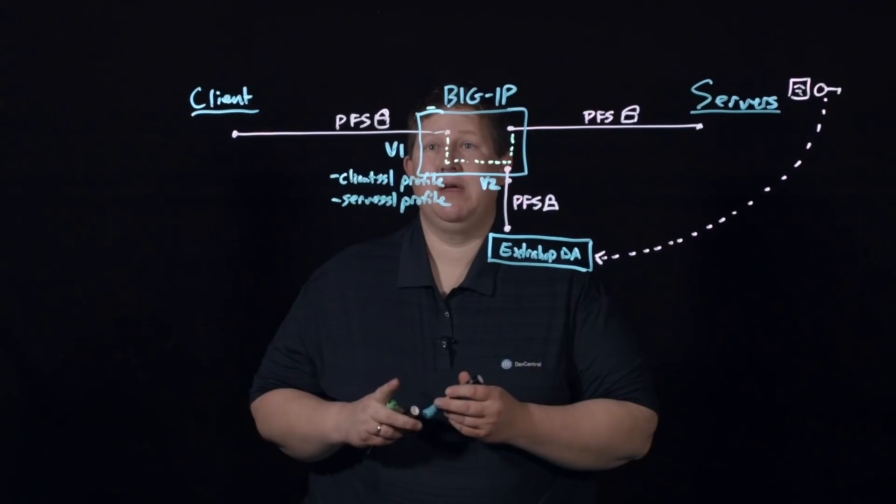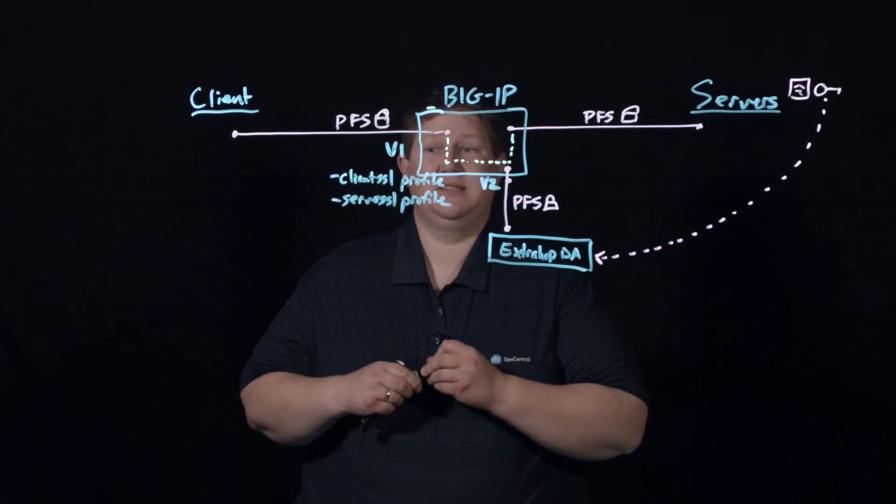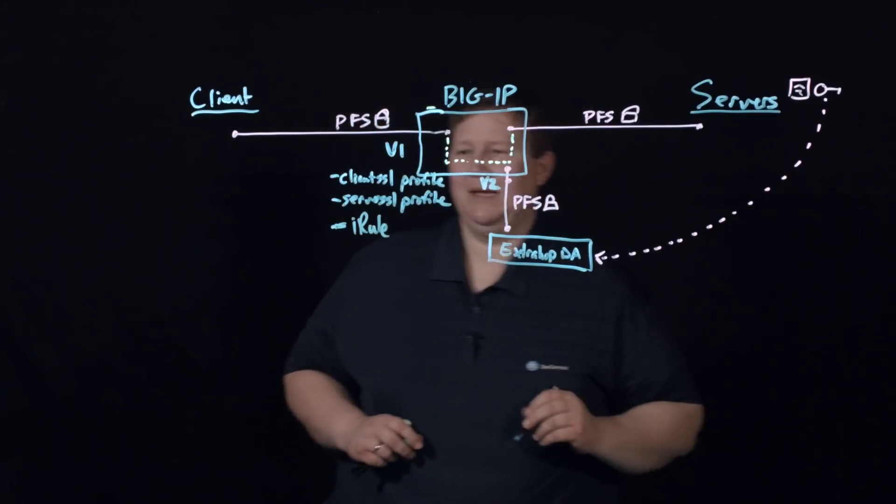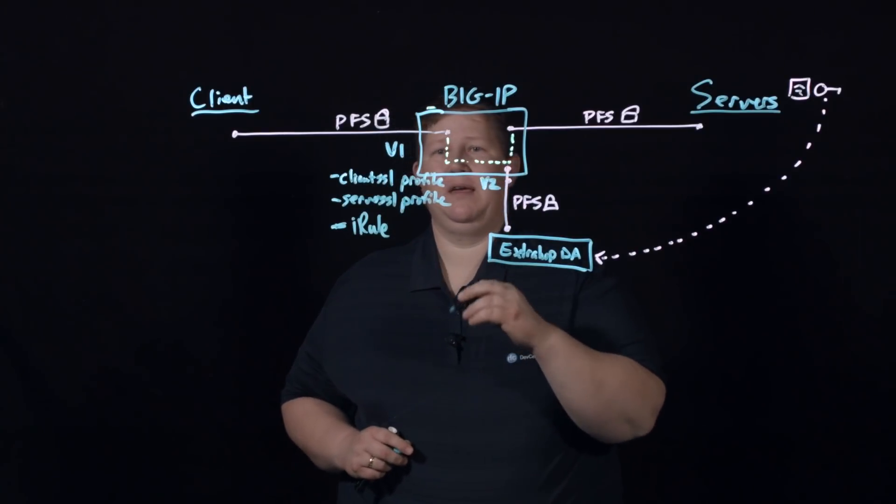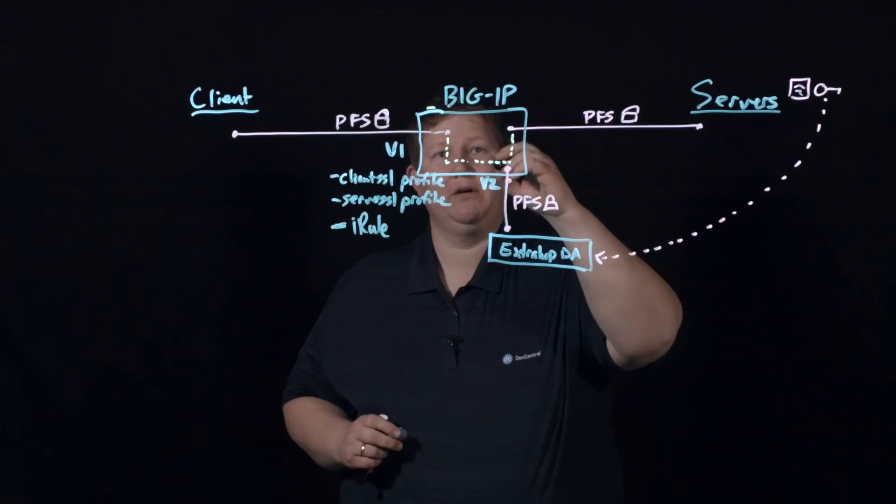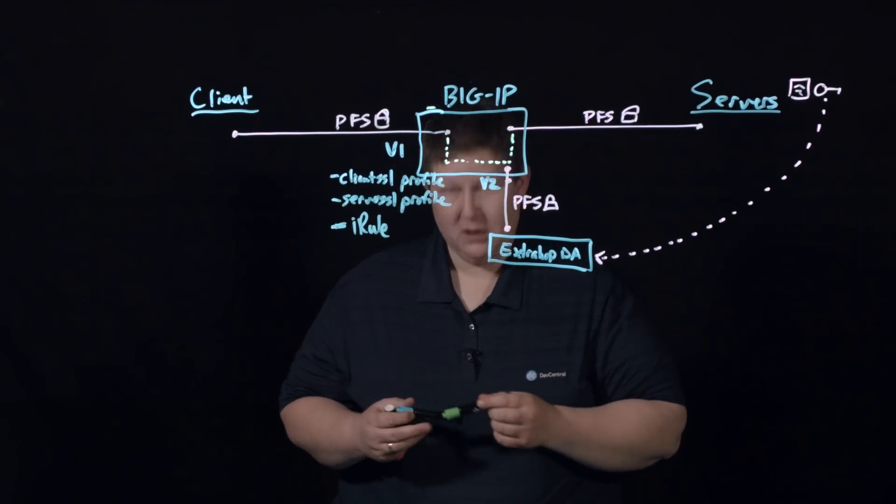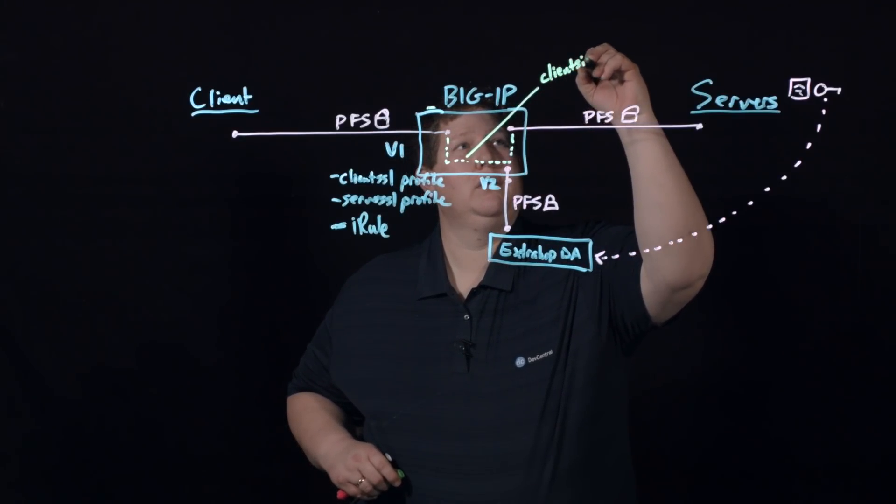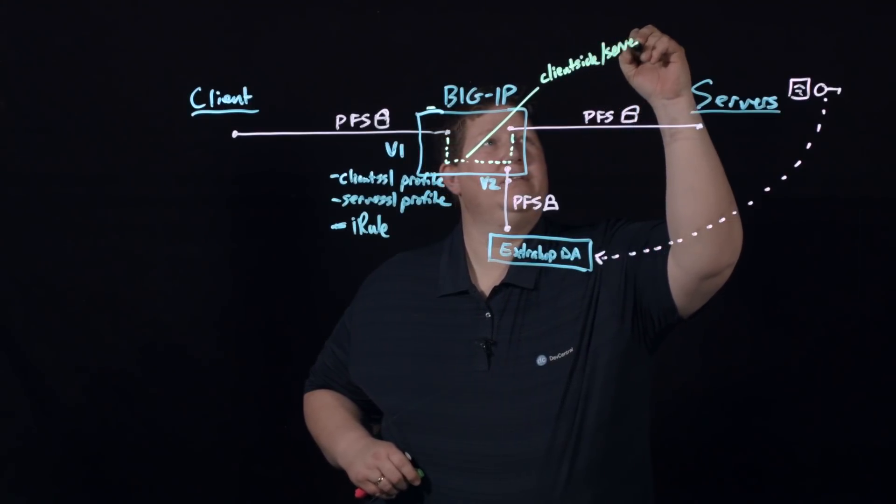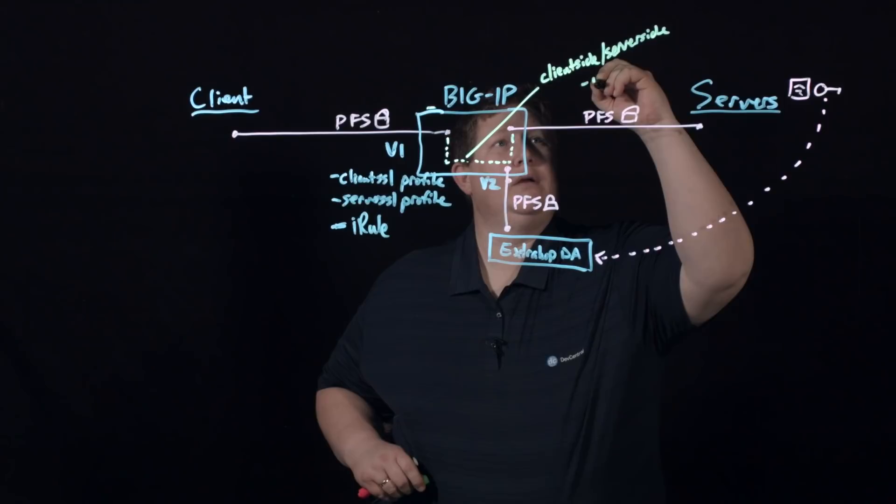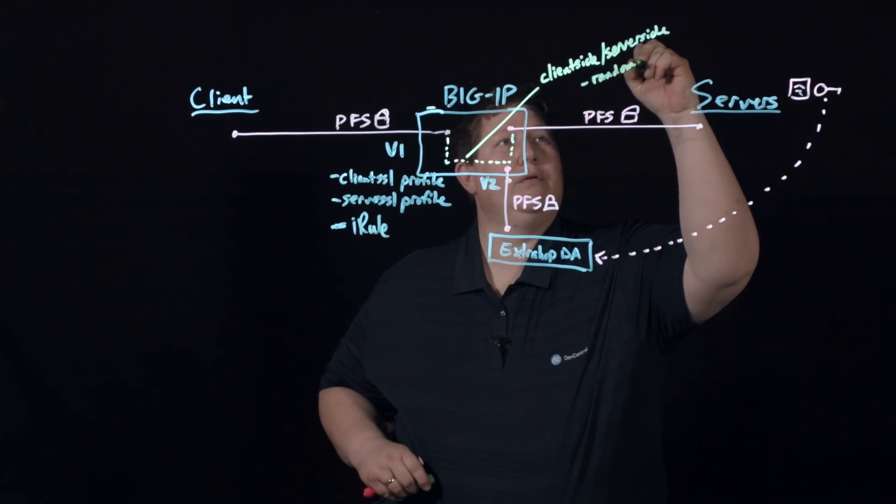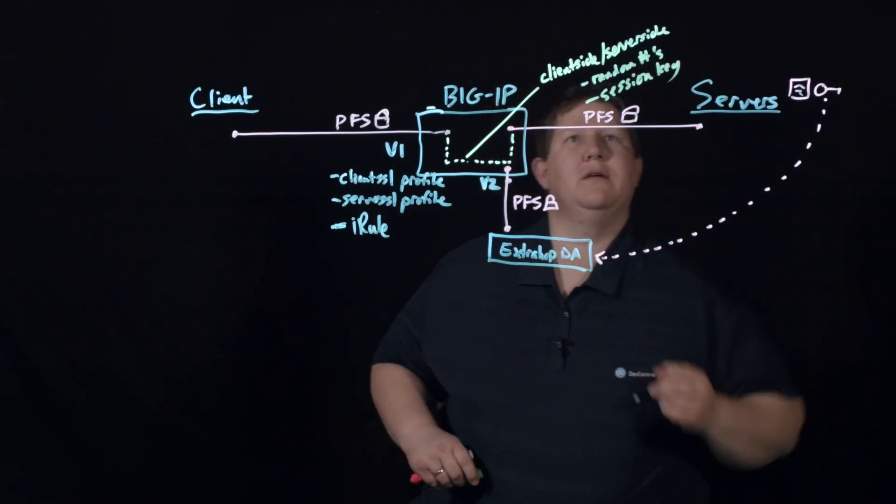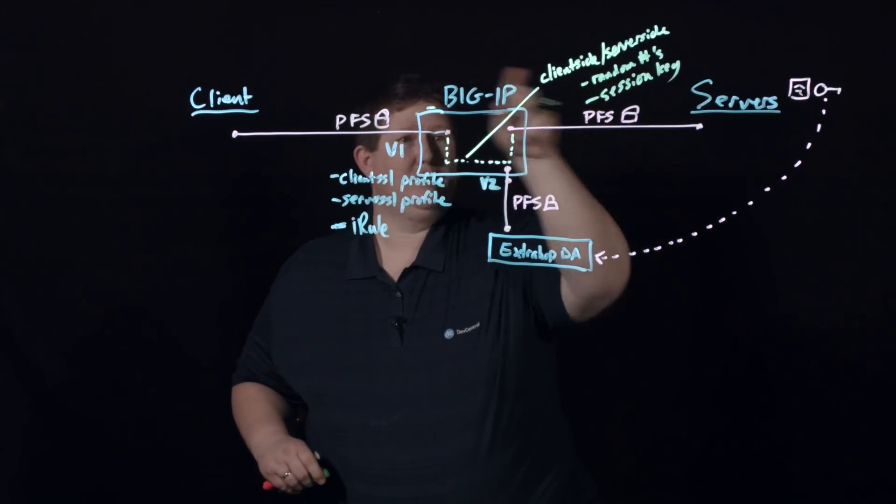And so what we do here is we have an iRule that sits on this virtual server. And this iRule is going to take, while we're unencrypted here, we're going to take the client side and server side random numbers and session key. So we're pulling that data out for both of these connections.